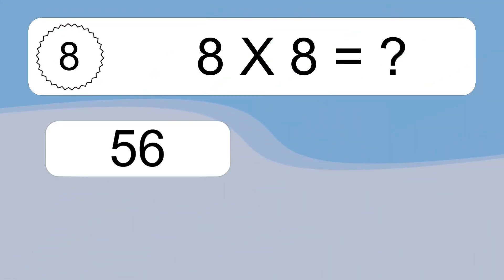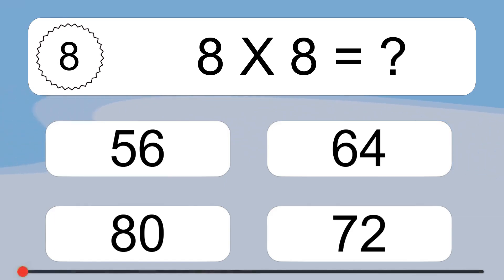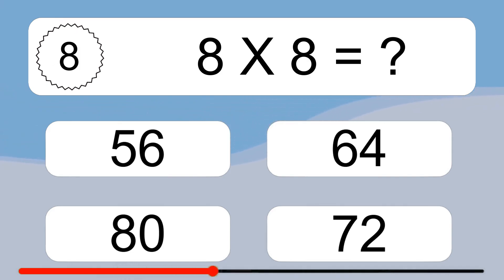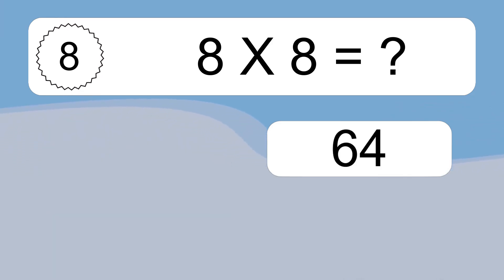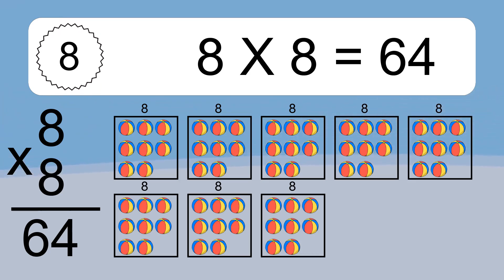8 times 8 equals what? 8 times 8 equals 64. We have 8 boxes, and each box has 8 colorful balls inside. If you count all the balls in all the boxes together, you will have 8 times 8 balls. This equals 64 balls.